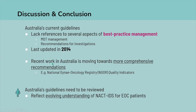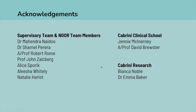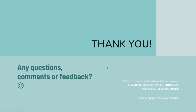Recent work in Australia is moving towards more comprehensive recommendations, for example the national gynae-oncology registry quality indicators for ovarian cancer treatment. In conclusion, Australia's guidelines need to be reviewed to reflect our evolving understanding of the benefits of chemotherapy first in certain subgroups of the EOC patient population. I'd like to acknowledge my supervisory team, angle team members, and the team at Cabrini. Happy to take any questions.